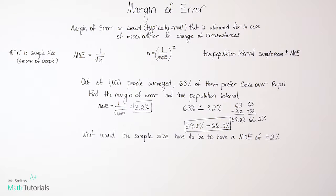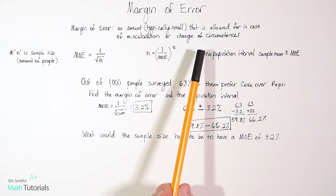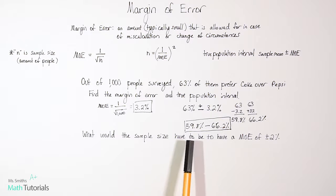What the survey found was that 63% of people prefer Coke, but in case of miscalculation or maybe a change in circumstances, really, we could say between 59.8% and 66.2% of people prefer Coke. And that includes that margin of error.